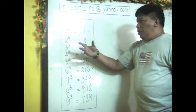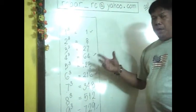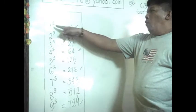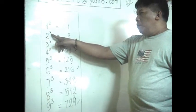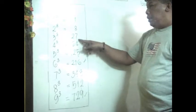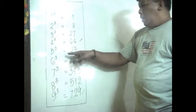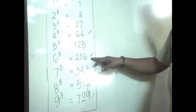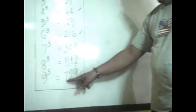As we recall: 1³ = 1. Remember, cubing a number means multiplying it by itself three times — 1×1×1 = 1. For 2: 2³ = 2×2×2 = 8. Likewise, 3³ = 27, 4³ = 64, 5³ = 125, 6³ = 216, 7³ = 343, 8³ = 512, and 9³ = 729.